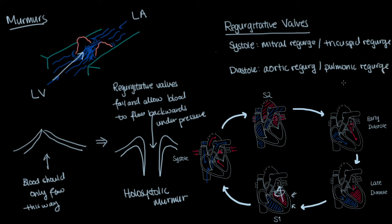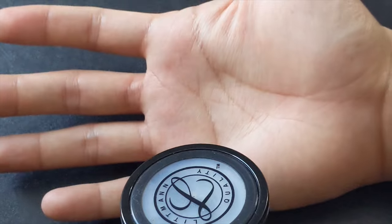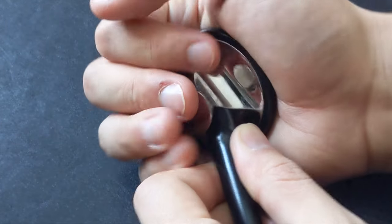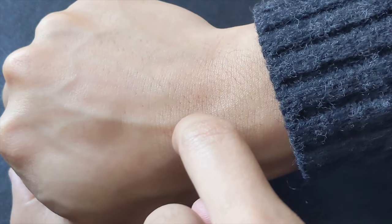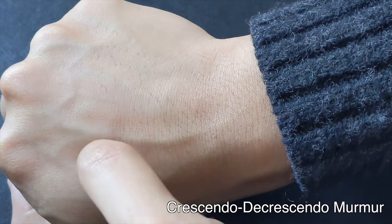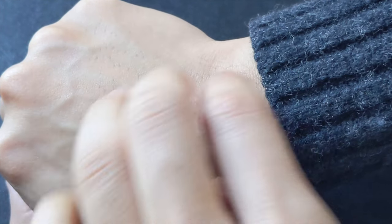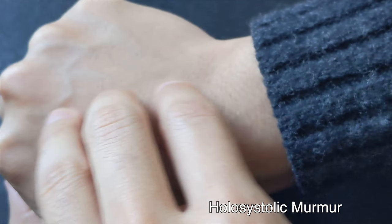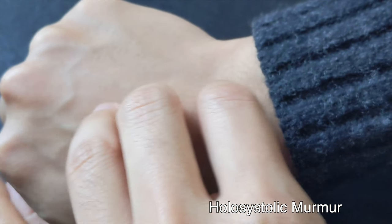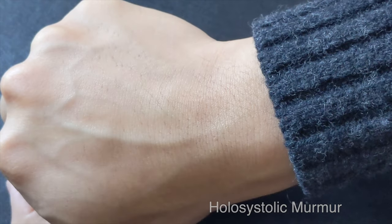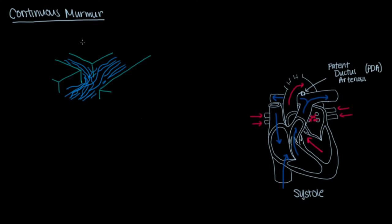If you would like to try to replicate these crescendo decrescendo and holosystolic murmurs to train your ears on your own time, I have been taught this little trick where you cup your stethoscope in your hand and on the back of your hand you trace an upside-down V or U to simulate a crescendo decrescendo murmur and you drag two or three fingers across in the straight line to simulate a holosystolic murmur. The last type of murmur we'll talk about is a continuous murmur.